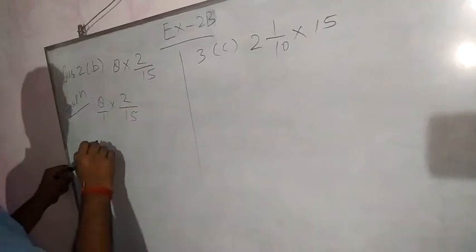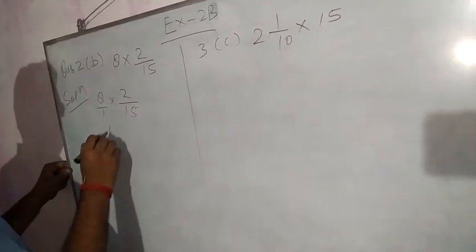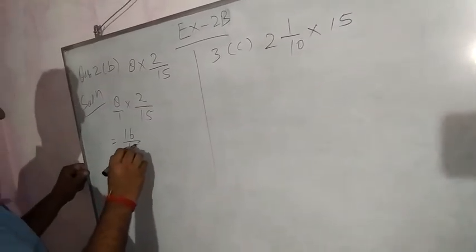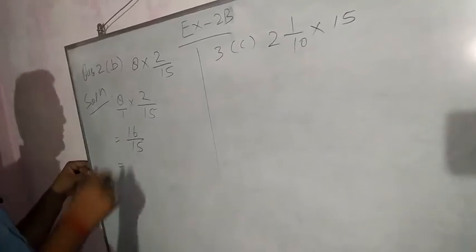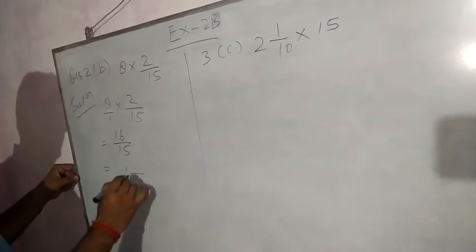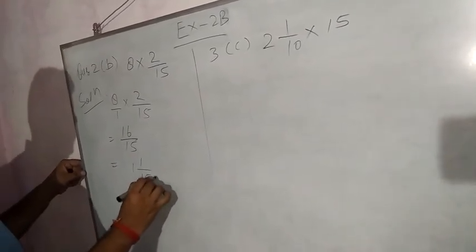Now what we can write: 8 × 2 = 16/15. Now you know how you change into mixed form: 15 × 1 = 15, whole 1/15. This is the answer.